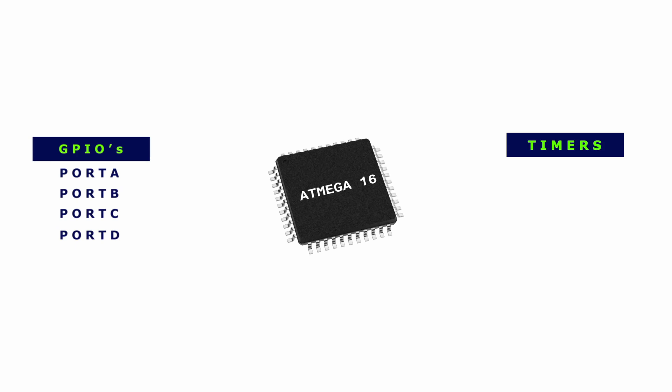The second peripheral is timers. We have three different timers in our Atmega16 microcontroller: Timer0, Timer1, and Timer2. Timer0 and Timer2 each have one output compare channel, and Timer1 has two output compare channels and one input capture channel.